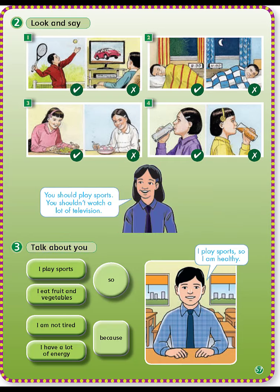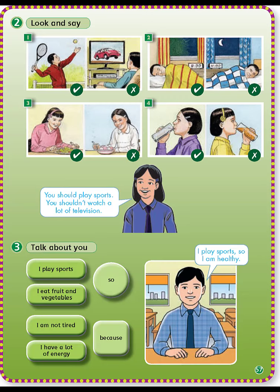طبعا كل طالب بكتب جمل وبعمل عنها. Three: talk about you. نترجع السؤال: I play sports so I am healthy. فبنحكي بالثانية مثلاً: I eat fruit and vegetables so I am healthy. I am not tired because I go to bed early. وكل طالب يكمل على نفس هذا النسق.